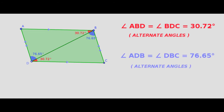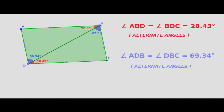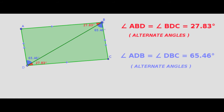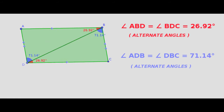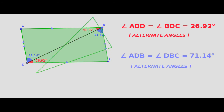BD is a common side. According to the ASA rule, triangle ADB is congruent to triangle DBC. We can verify this congruency by varying the measurement of the parallelogram.